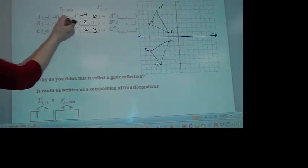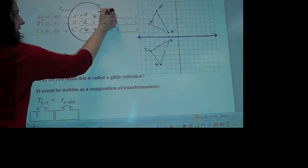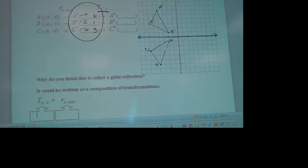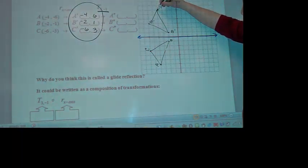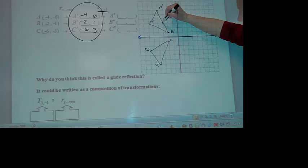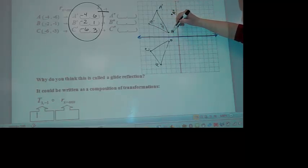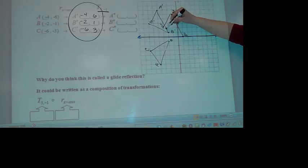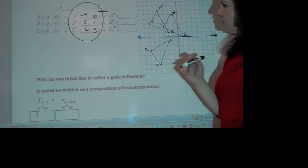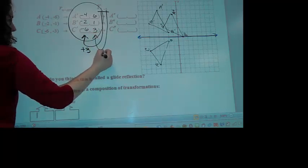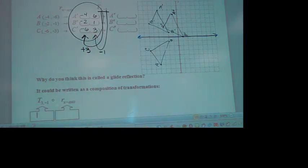Now, we're taking this one and translating it 3, negative 1. So we're not going back to the original. We're doing it from the reflected figure. And you can do this by graphing, by just saying, okay, this point goes 3 over and 1 down. Double prime. 3 over, 1, 2, 3, and 1 down. Or we could just take 3 and add it to all these x values, take away 1 from all those values.